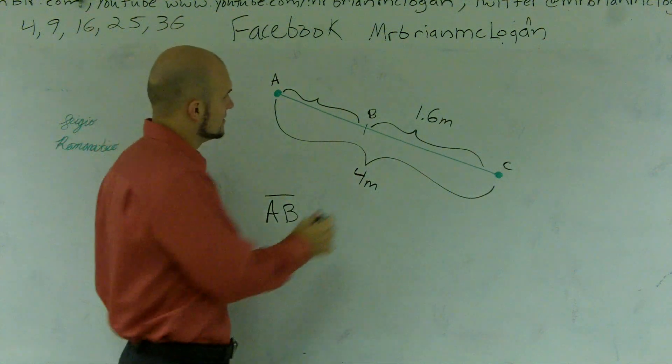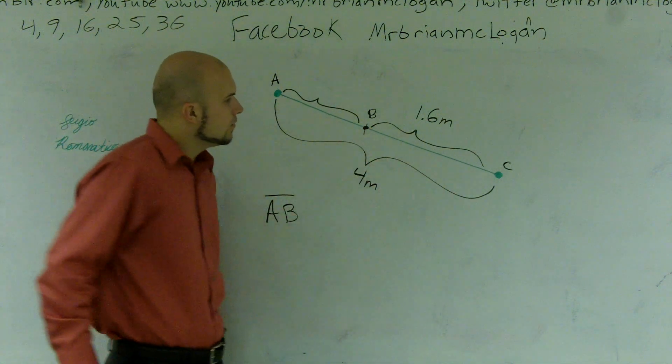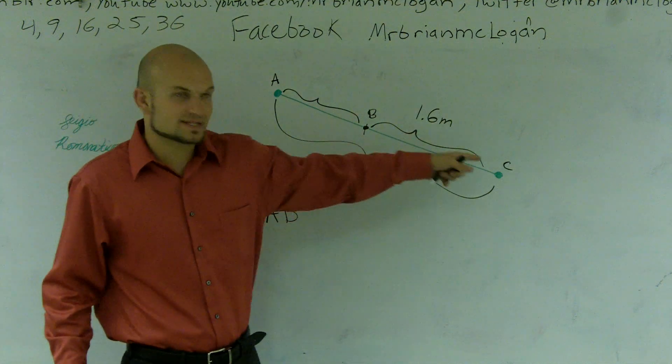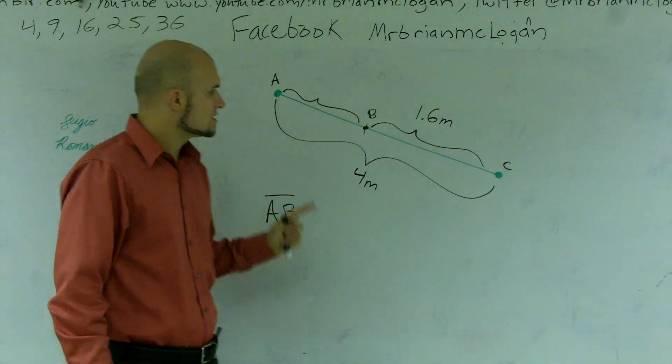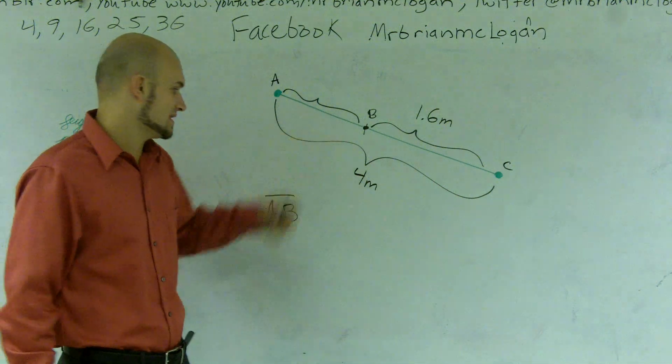So one thing we know is the length from B to C is 1.6m, and the whole distance is 4 meters. So what I can do if I want to find the missing length...